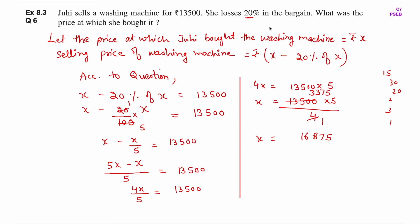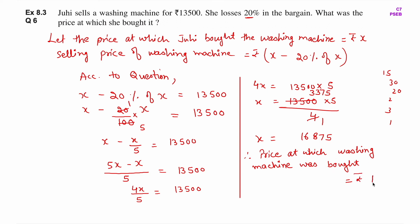X को हमने assume किया था washing machine की cost price — मतलब जितने में Juhi ने washing machine को buy किया. Therefore, price at which washing machine was bought is equal to rupees 16,875. This is the answer. Answer में rupees ज़रूर लगाना है. This was question number 6. In the coming videos, we will solve more questions. Thanks for watching. Take care.